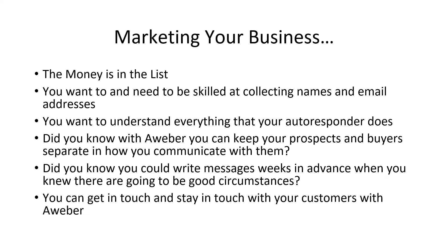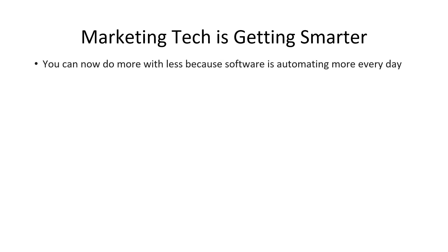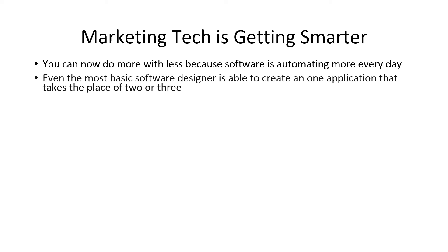One of the things you probably realize is that marketing technology, whether you are an online marketer or a brick-and-mortar business owner, is now getting smarter every single day. You can now do more with less because software is automating more of what we do. Even basic software is now able to create one application that takes the place of two or three that used to do the same job. Many of these applications are doing an excellent job of combining functions.